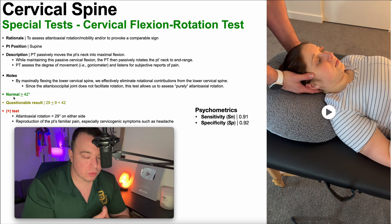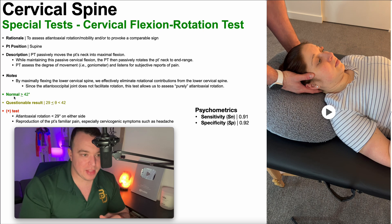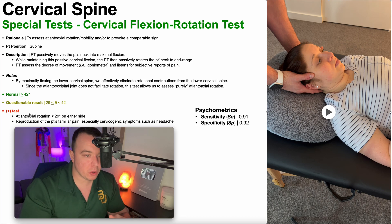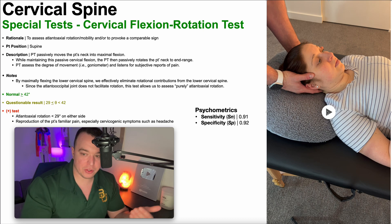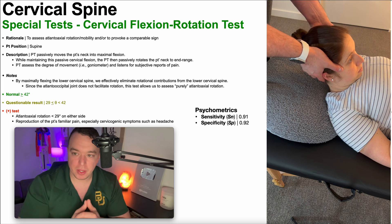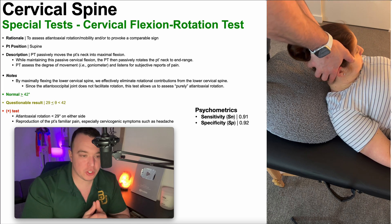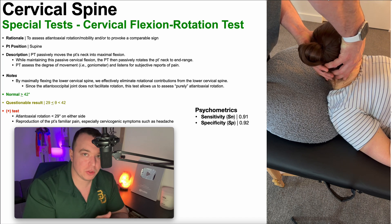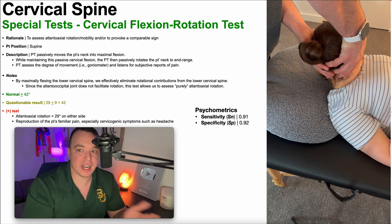So what is a normal value for this cervical flexion rotation test? Normally, that atlanoaxial rotation should be at least 42 degrees. A positive test occurs with one of two things — sometimes both — when the atlanoaxial rotation is less than 29 degrees on either side. So let's say we're testing the asymptomatic side first. We do left cervical rotation, and that's certainly more than 42 degrees — that's normal or negative on that side.